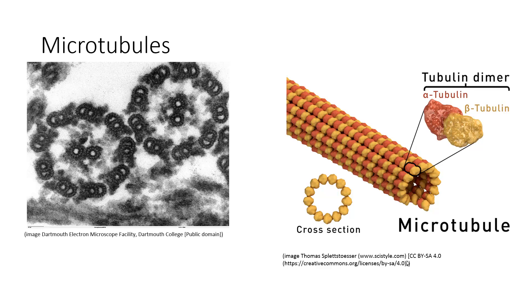There are three essential components of the cytoskeleton. The first of these are microtubules. Microtubules are heterodimers, meaning two different monomers — alpha tubulin and beta tubulin — assemble into a dimer which then further polymerizes to give us our microtubule.